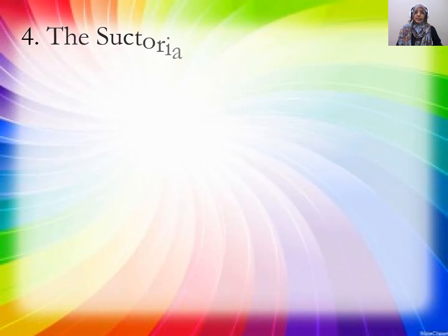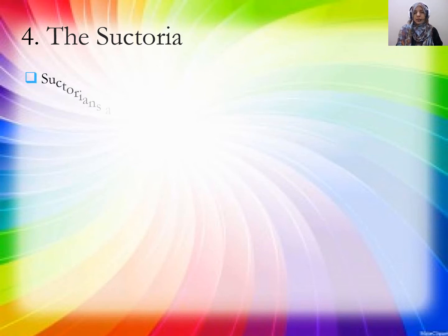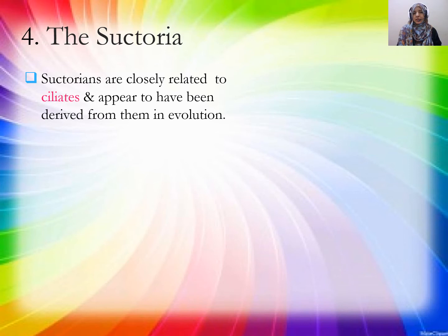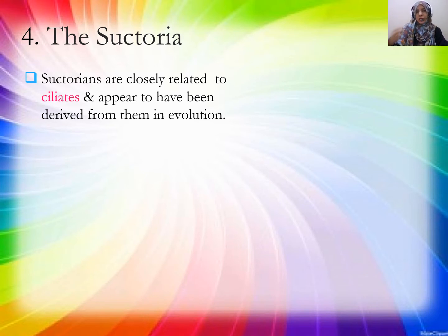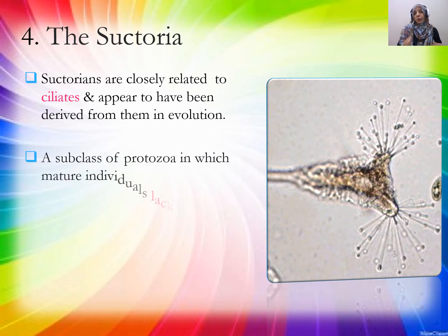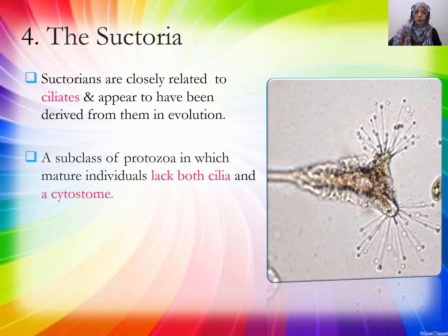The fourth class is Suctoria. Suctoria is closely related to ciliates and appears to have been derived from them in evolution, sharing some characters with ciliates. Suctoria is a subclass of Protozoa. When immature, they have cilia, but when mature, they do not have cilia.